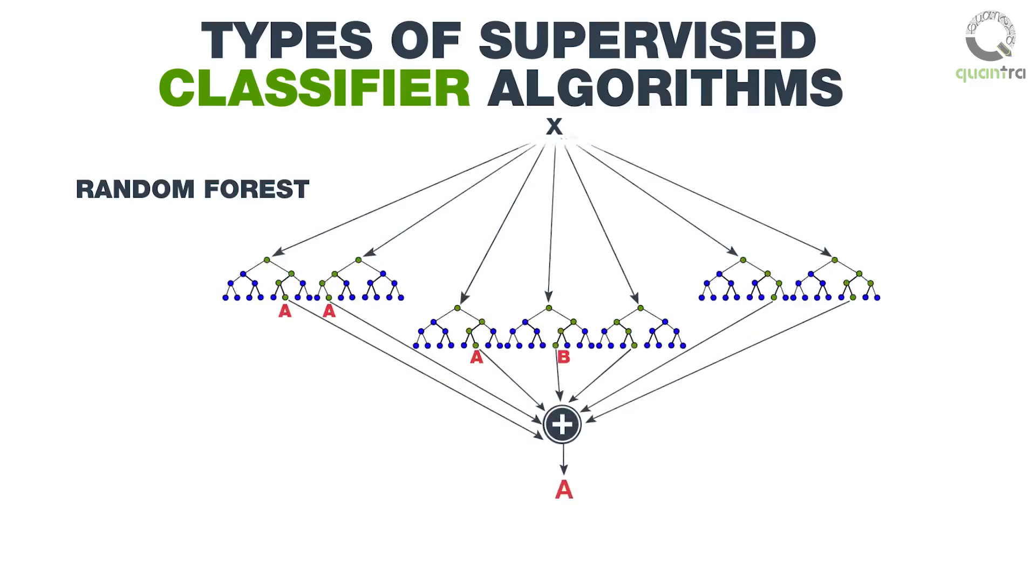B, B, A, A to the data point. The class in which the data point is allotted the maximum number of times by the classifier is selected, which is A in this case.